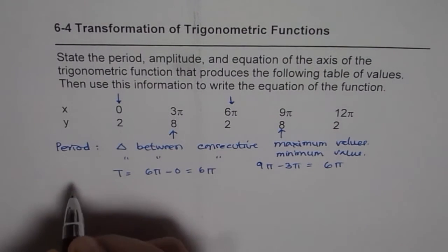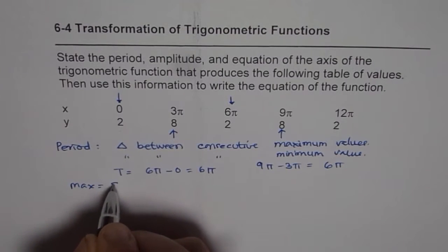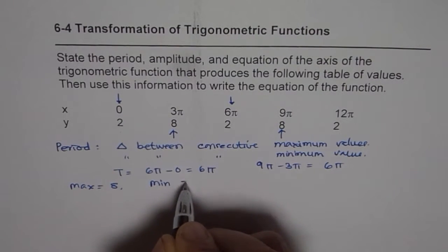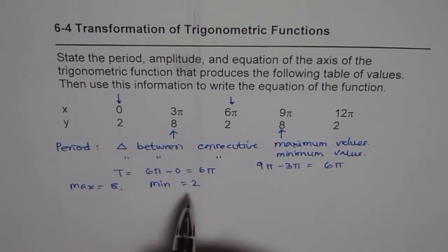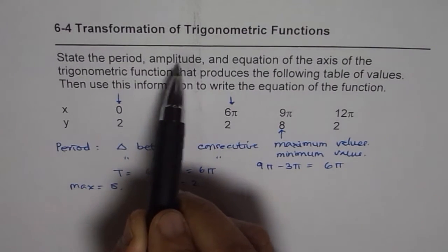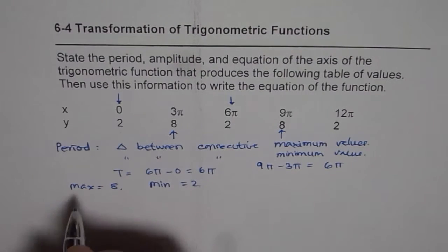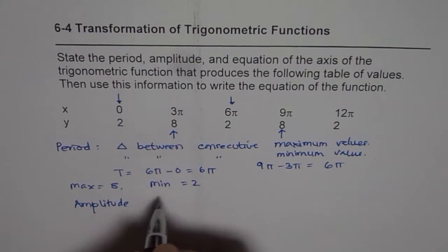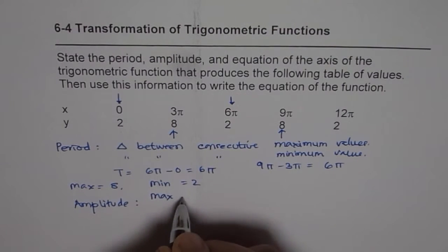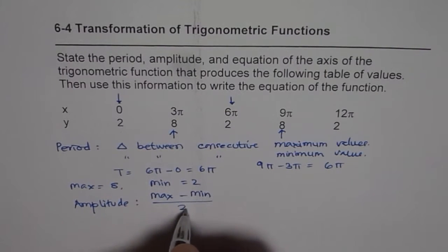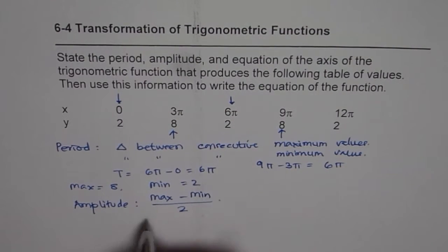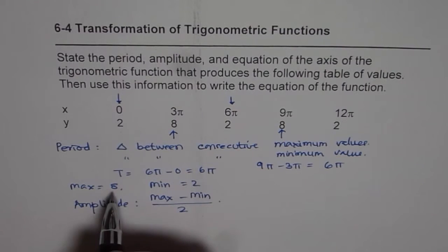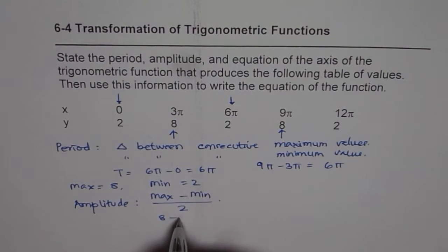Now we know that the maximum value is 8 and minimum value is 2. These help us find the amplitude and equation of the axis. To find amplitude, we calculate: (maximum - minimum) ÷ 2. In our case, that's (8 - 2) ÷ 2 = 6 ÷ 2 = 3. So the amplitude A equals 3.